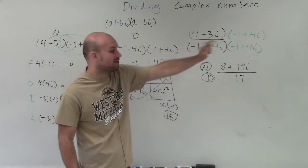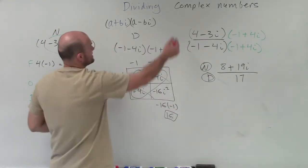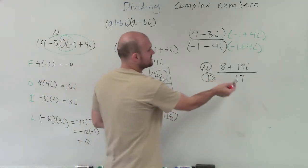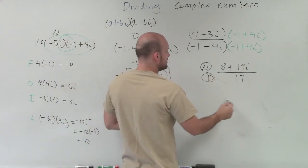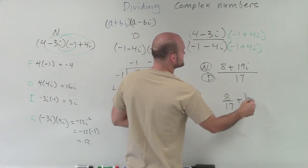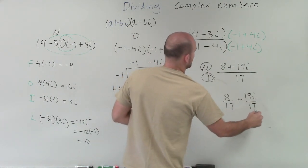Now I just need to rewrite it in the form of a plus bi. So I divide the 17 into both terms. My final answer is going to be 8 over 17 plus 19i over 17.